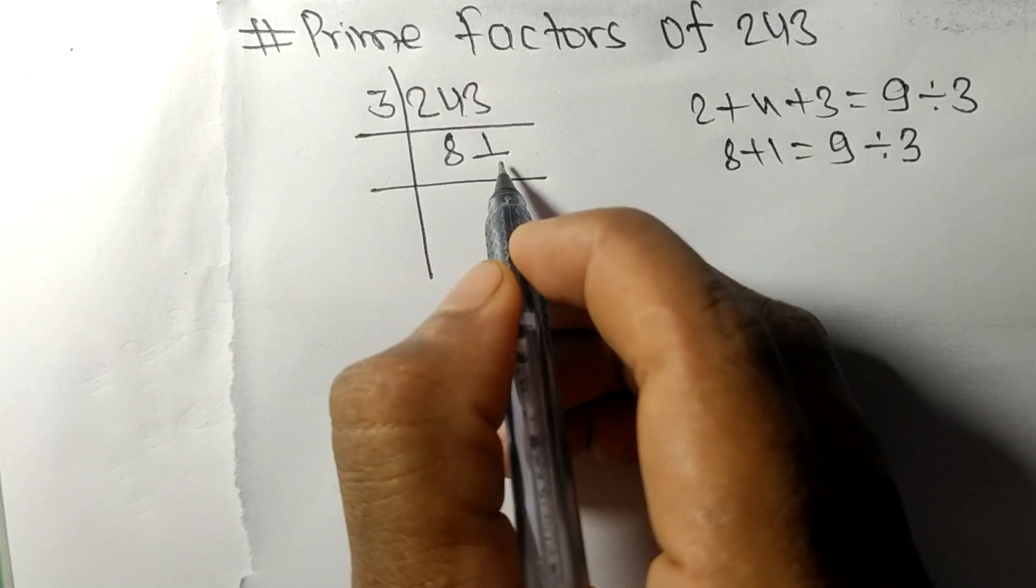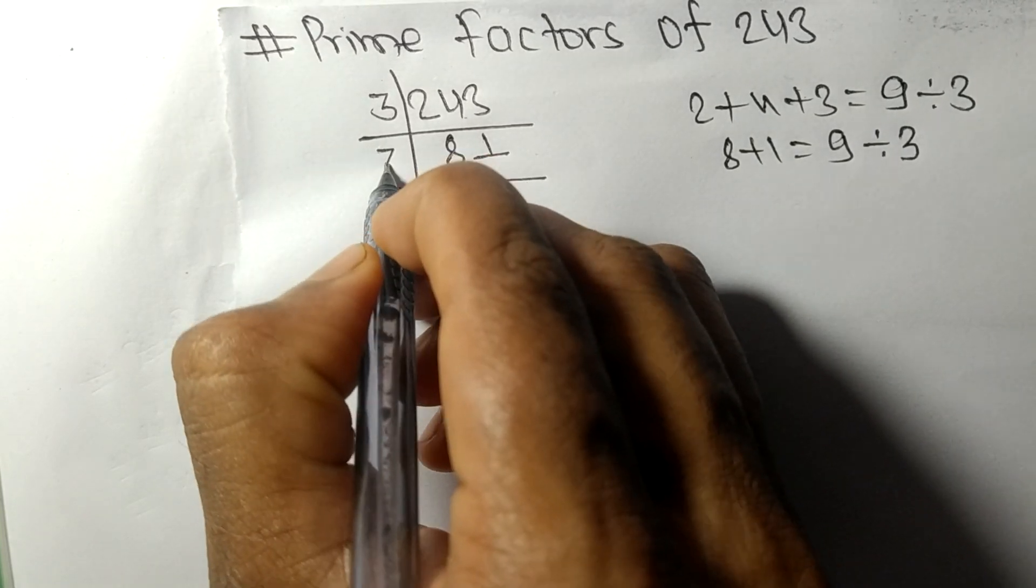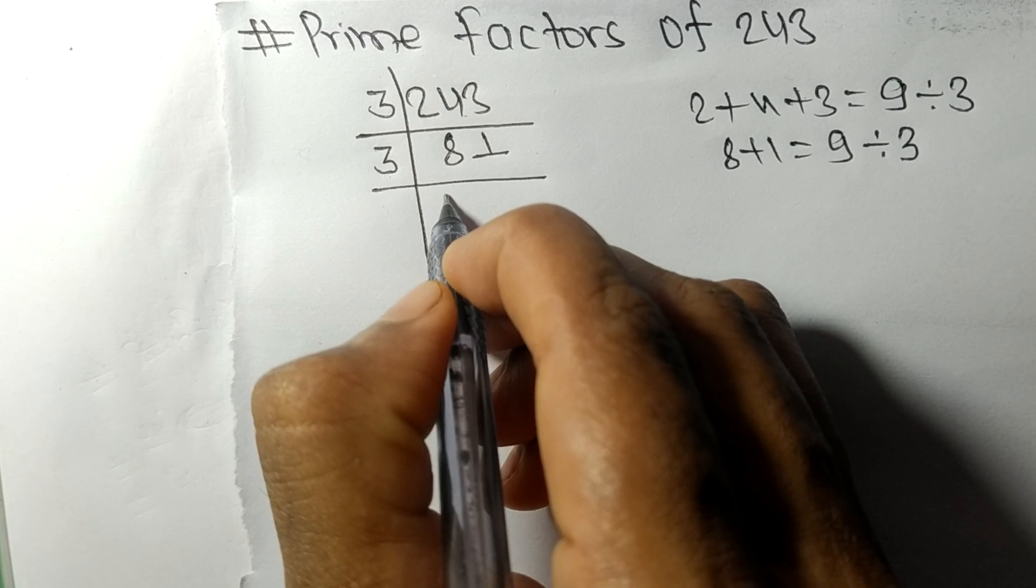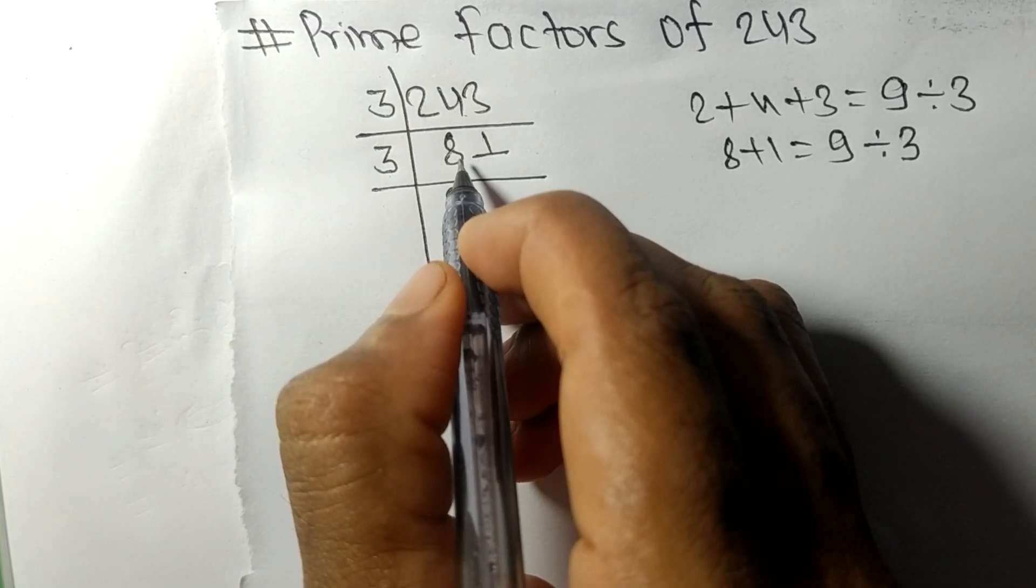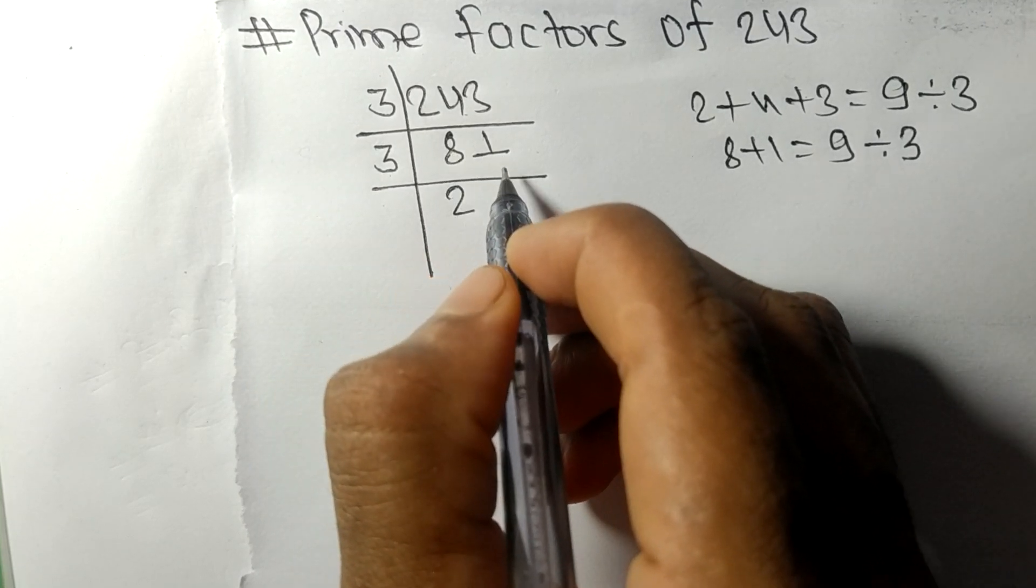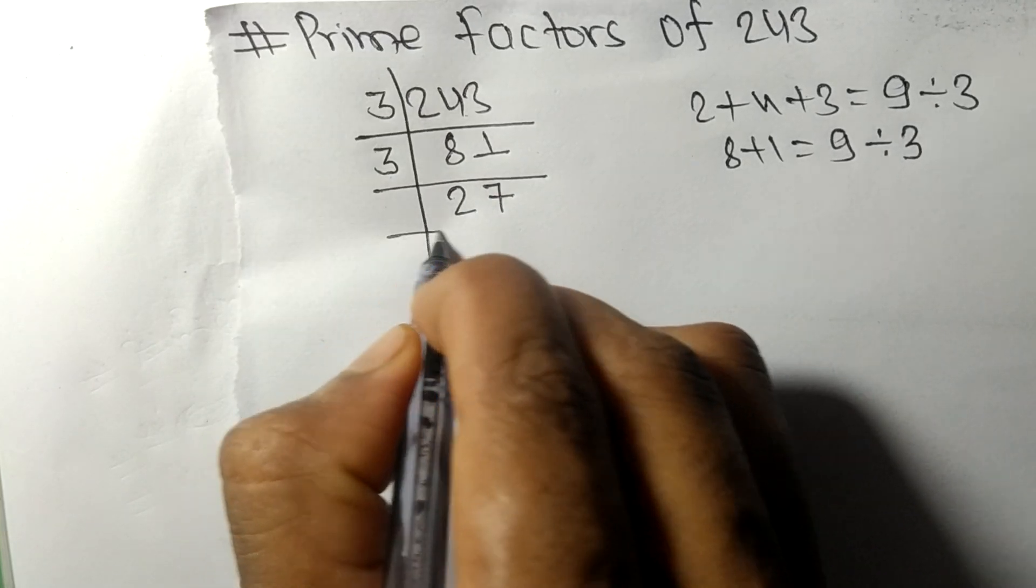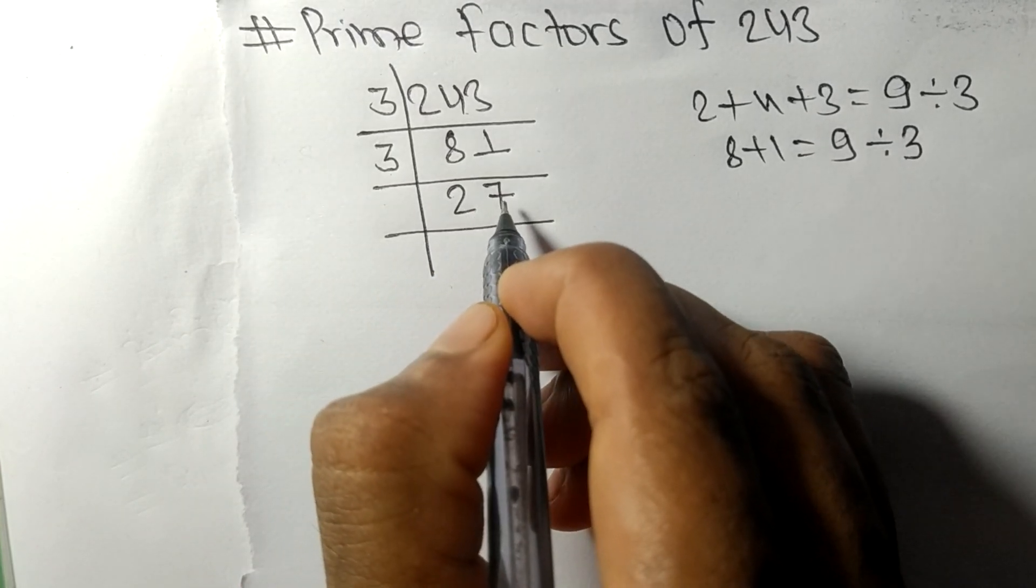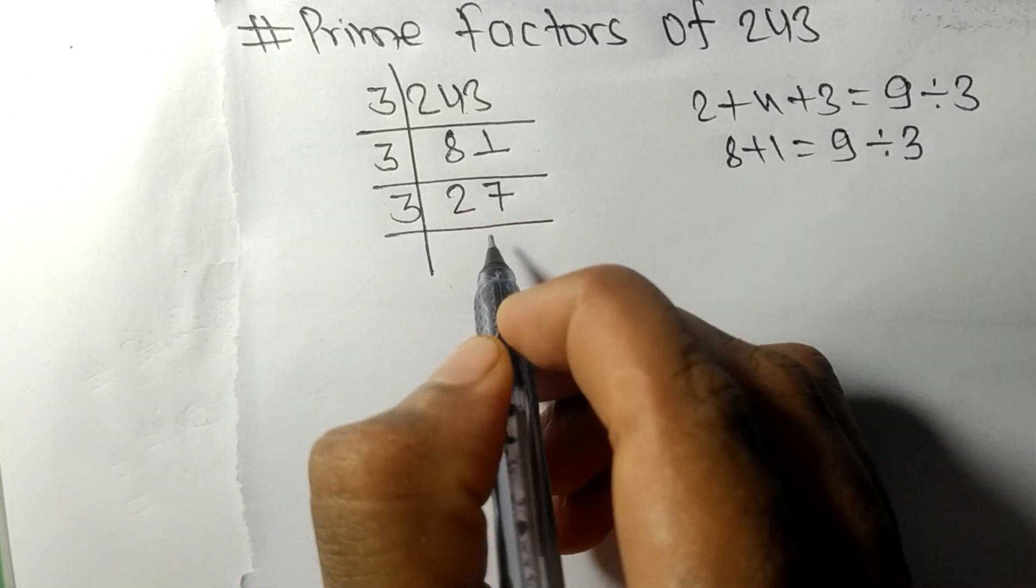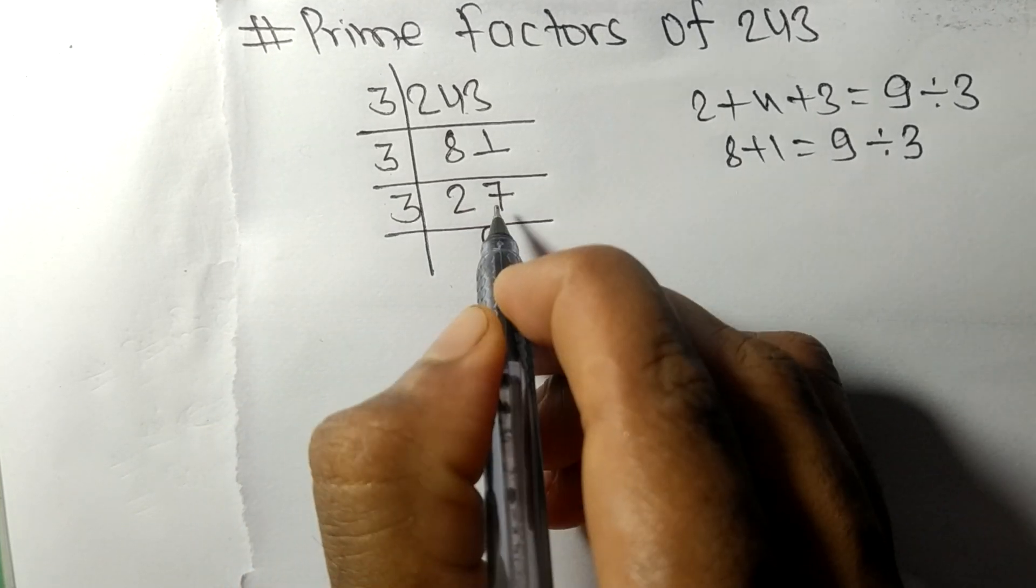So 81 is also divisible by 3. 3 times 2 means 6, remainder 2, so 21. 3 times 7 is 21. Now we got 27 which is divisible by 3. 3 times 9 is 27.